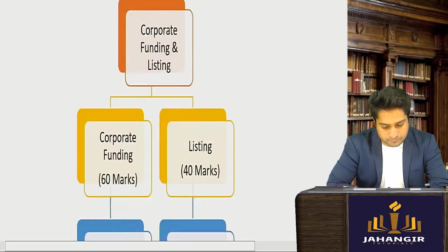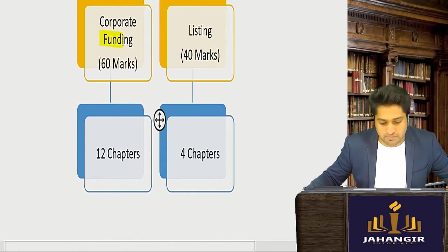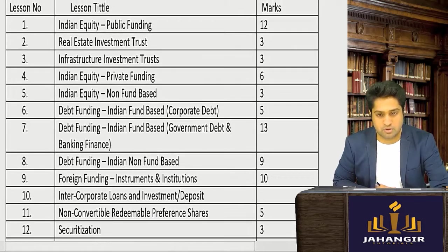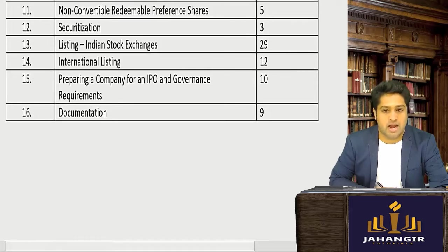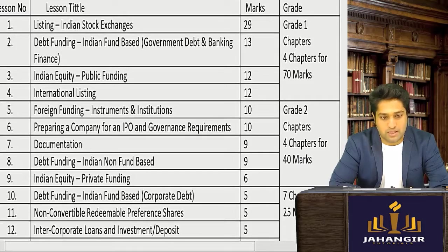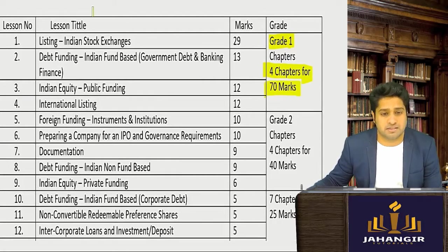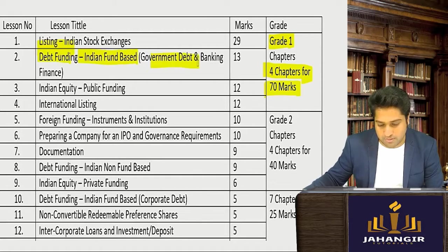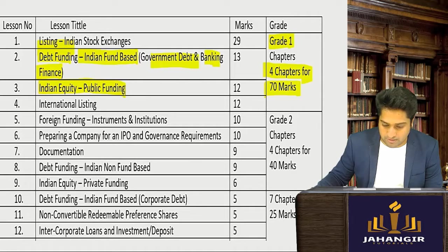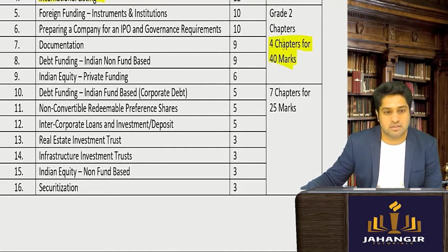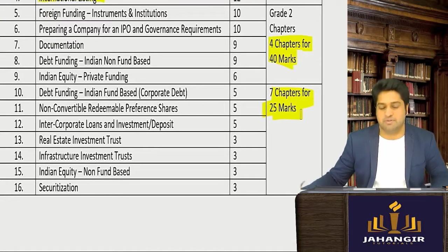Corporate funding is the group three first subject. It is divided into two parts: the funding aspect is 60 marks with 12 chapters, and listing is 40 marks with 4 chapters. Grade one chapters are 4 chapters for 70 marks — listing, debt funding, Indian fund-based government debt, banking finance, Indian equity public funding, and international listing. Grade two has 4 chapters for 40 marks, and grade three has 7 chapters for 25 marks.